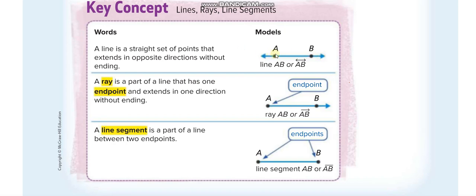We put two points A and B just to represent the name of the line. Whenever you see two arrows on both sides, you will say it is a line. You can write it as Line AB, or you can write A and B with a small double-arrow line above it.